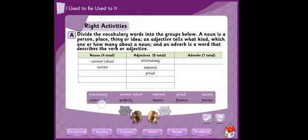Celebration is a noun - words that end with the syllable 'tion' are always nouns. Perfectly ends with L-Y, so it is an adverb. Lessons, دروس, is a noun. Flawless, لا عيب او لا نقص فيه, is an adjective. And the last one, familiar, is also an adjective meaning معروف او مألوف. This is the correct answer.